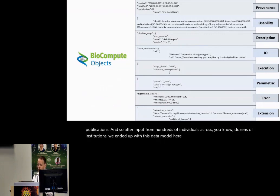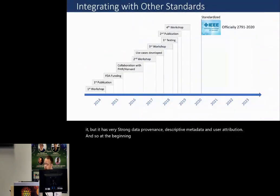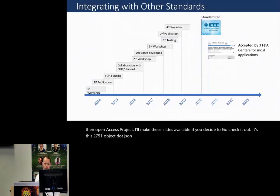Unfortunately, I don't have time to get into it, but it has very strong data provenance, descriptive metadata, and user attribution. And so at the beginning of 2020, it was formally standardized as IEEE 2791-2020 through their open access project. I'll make these slides available if you decide to go check it out. It's this 2791 object.json file that you'll start with. It's all in JSON.